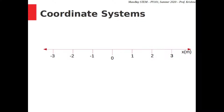Motion means a change in position, so we need a system for measuring the positions of objects. A coordinate system, like a number line, will work just fine. Here's a number line — we notice it stretches horizontally along the x-axis, and I've marked the origin.